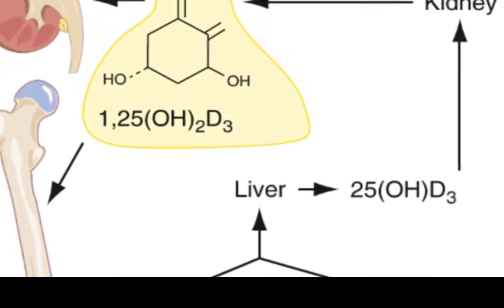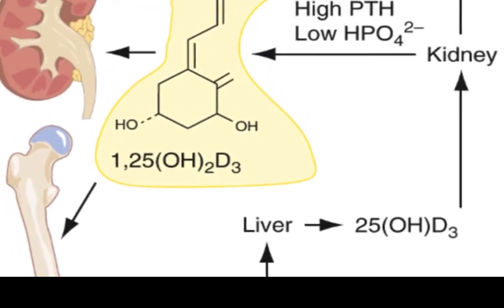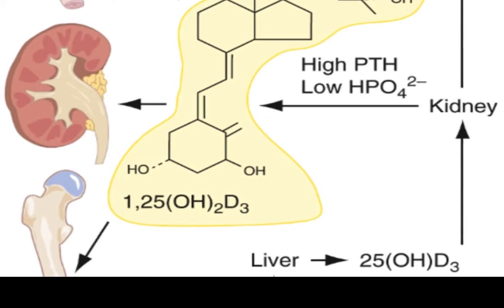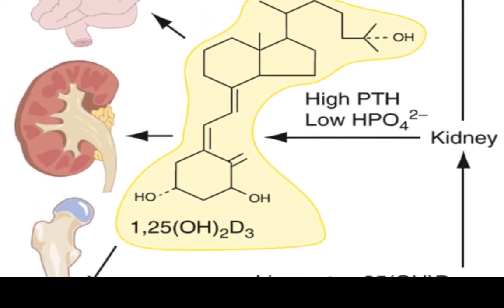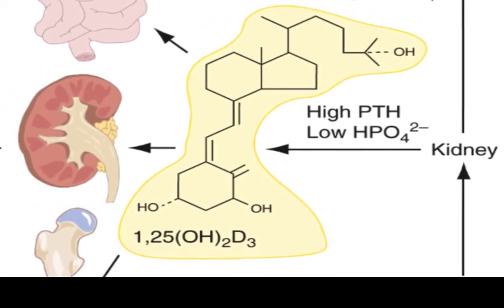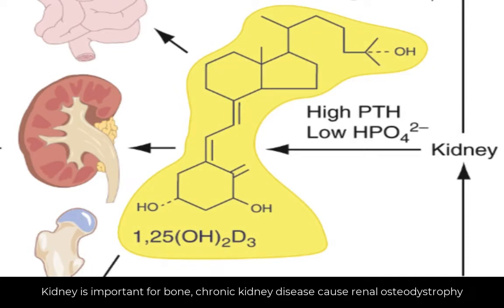When 25-hydroxy vitamin D arrives at the kidney, it is further hydroxylated by 1-alpha hydroxylase in the proximal tubular mitochondria to make the potent form of vitamin D, which is 1,25-dihydroxy vitamin D.